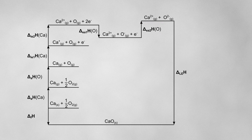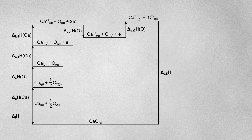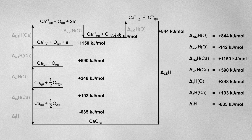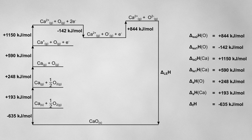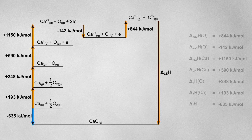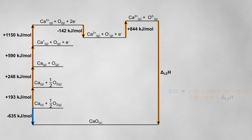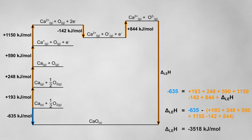Once the Born-Haber cycle is set up, I can assign values to the arrows using given enthalpy changes. Now, just like before, I need to find two routes which both follow the direction of the arrows. Again, these routes will start at the elements in their standard states and finish at solid calcium oxide. Thanks to Hess's law, I can equate these two routes and rearrange the equation to find the lattice enthalpy.